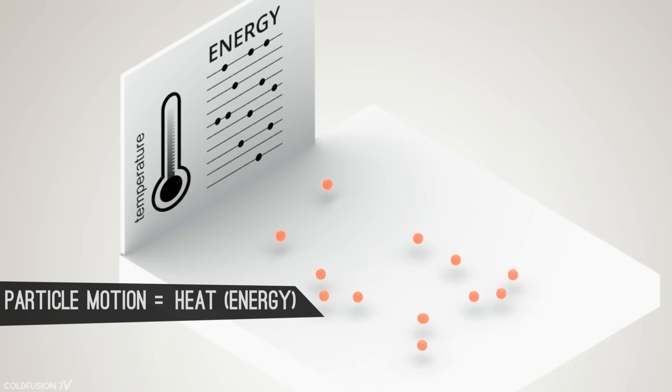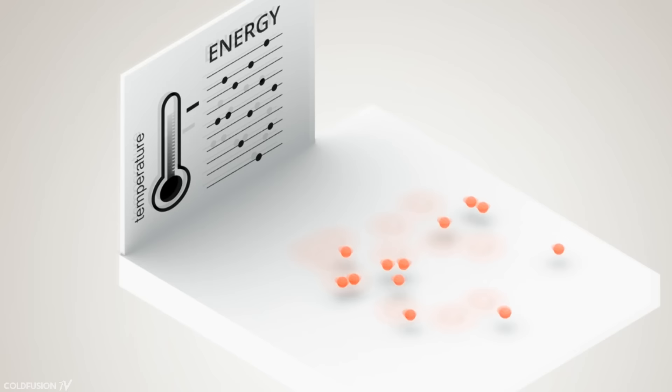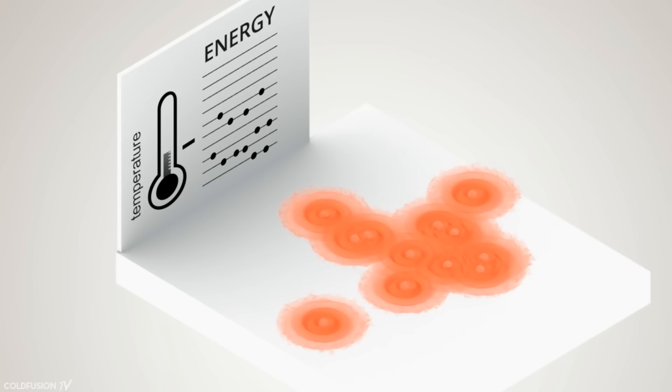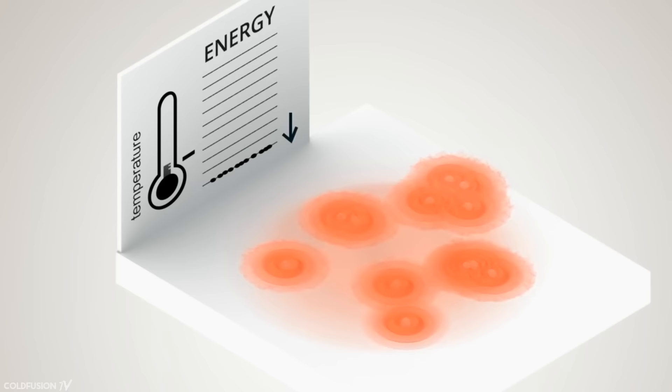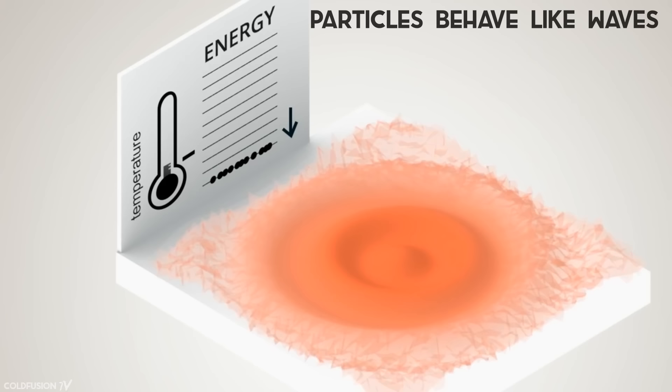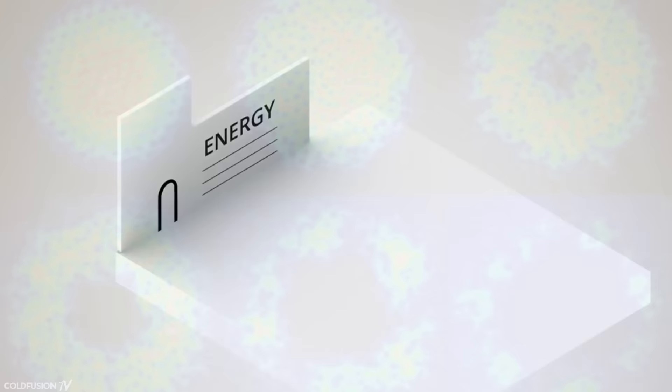So now that we've got that, let's keep cooling until we reach the next state of matter beyond the solid — the Bose-Einstein condensate. As it turns out, if you cool things enough to about a million times colder than anywhere in the universe, something interesting happens. The particles become so still that they lose their individual identity and begin to behave as one. And if that's not strange enough, the particles stop behaving as particles and begin to behave like waves instead. This new strange state of matter is the BEC, or Bose-Einstein condensate.